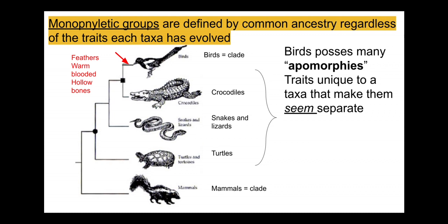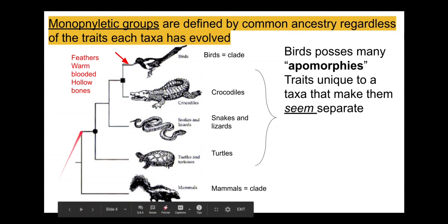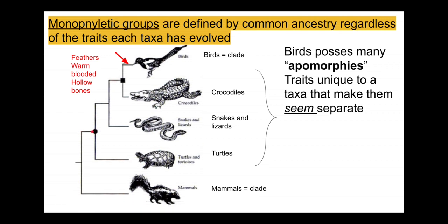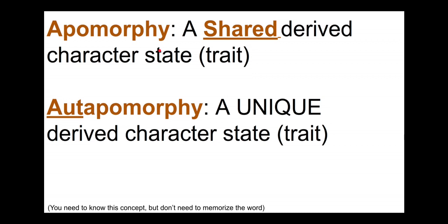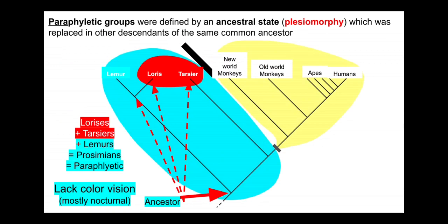Scales are a synapomorphie — a characteristic that emerged evolutionarily from tetrapod lineages. Some group of tetrapods evolved scales, and that population gave rise to all these taxonomic groups that share the trait in one form or another. When we run into trouble with non-monophyletic and paraphyletic groups, one issue is that they are being defined by an ancestral state. For example, lemurs, lorises, and tarsiers were once grouped as prosimians, partly defined by their lack of color vision since they're mostly nocturnal.